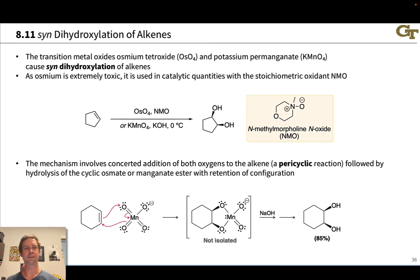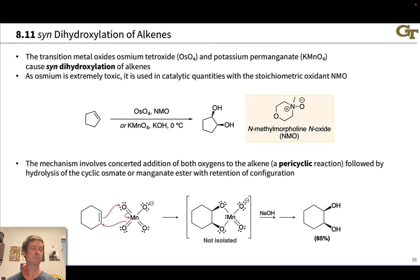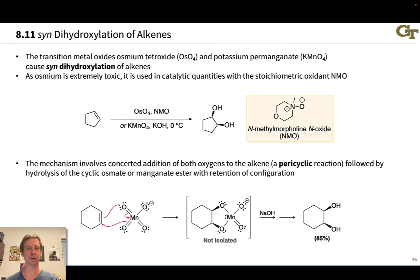Alternatively, we can use cold potassium permanganate (KMnO4) together with base (KOH) at cold temperature. The low temperature is critical to avoid cleavage of the carbon-carbon bond entirely and over-oxidation of the alkene.